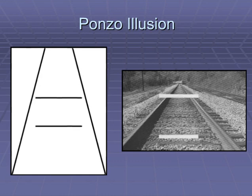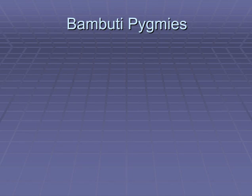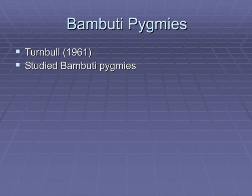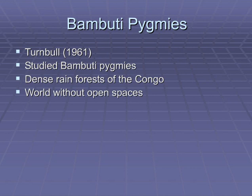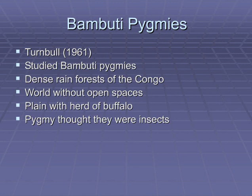Probably the most fascinating study involves the Bambuti pygmies, done by Turnbull in 1961. He studied the Bambuti pygmies who lived in the dense rainforest of the Congo — a world without open spaces. He took these pygmies out into a plain with a herd of buffalo. The pygmies thought they were insects, because they were little, and if they were little, they had to be insects.